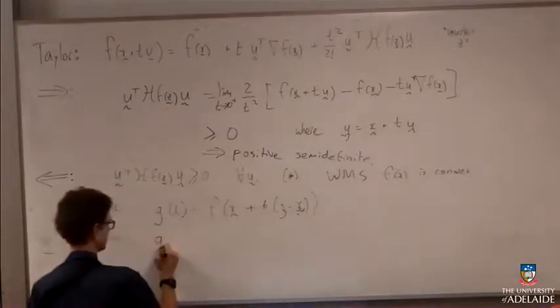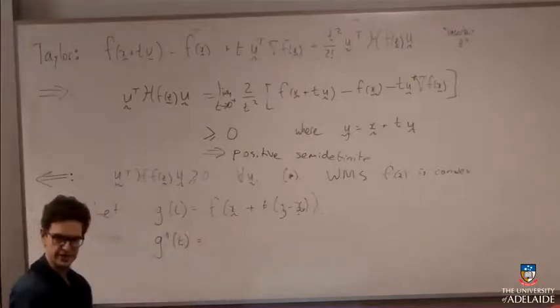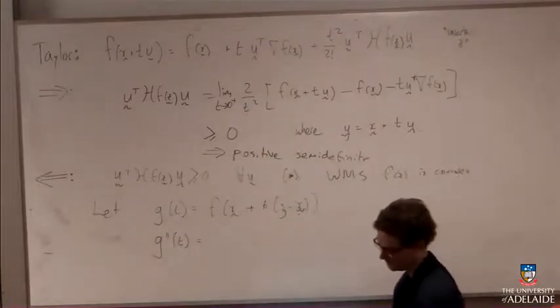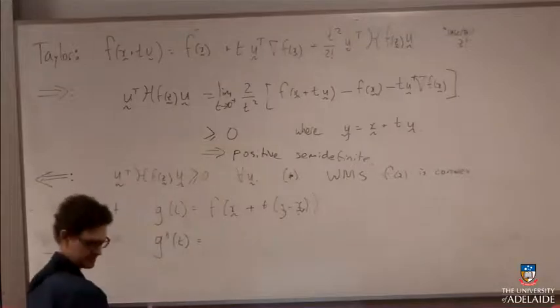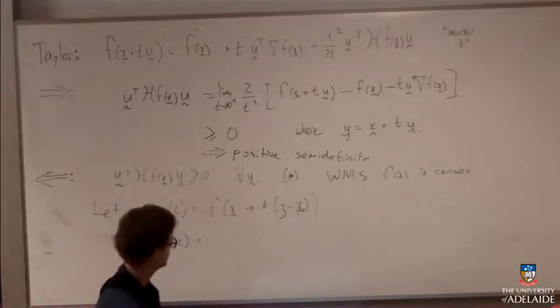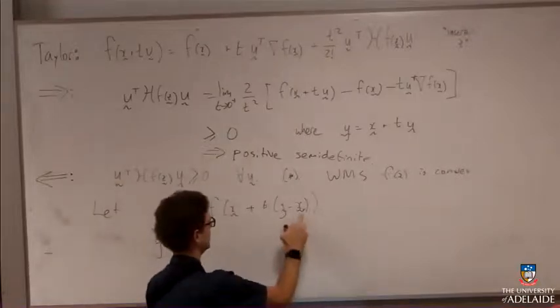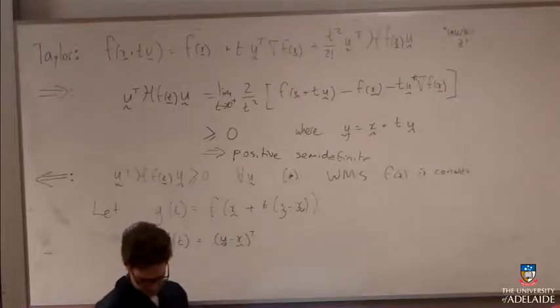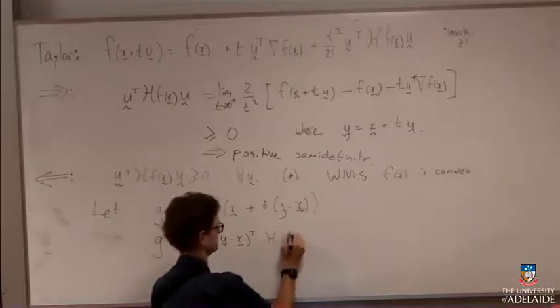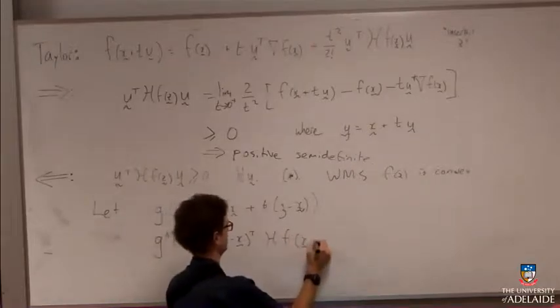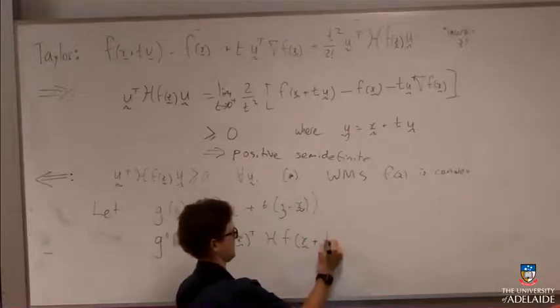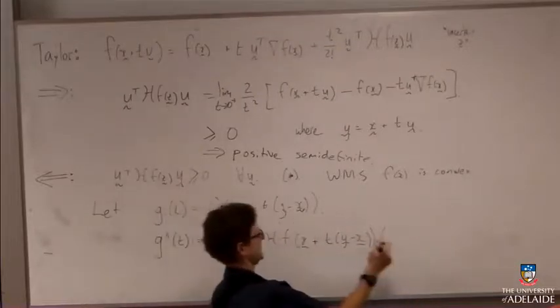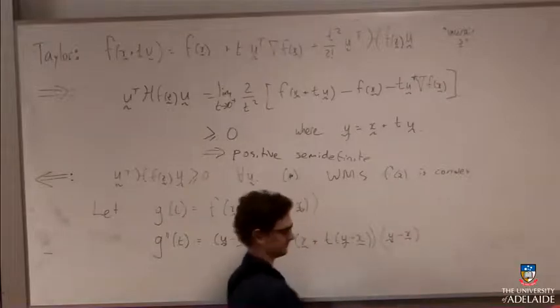So because this is a one-variable function, I can differentiate it. I've differentiated it before when I've derived this. And what you get when you differentiate it twice is you get this object. I'm going to get y minus x transpose times the Hessian of this function times y minus x.